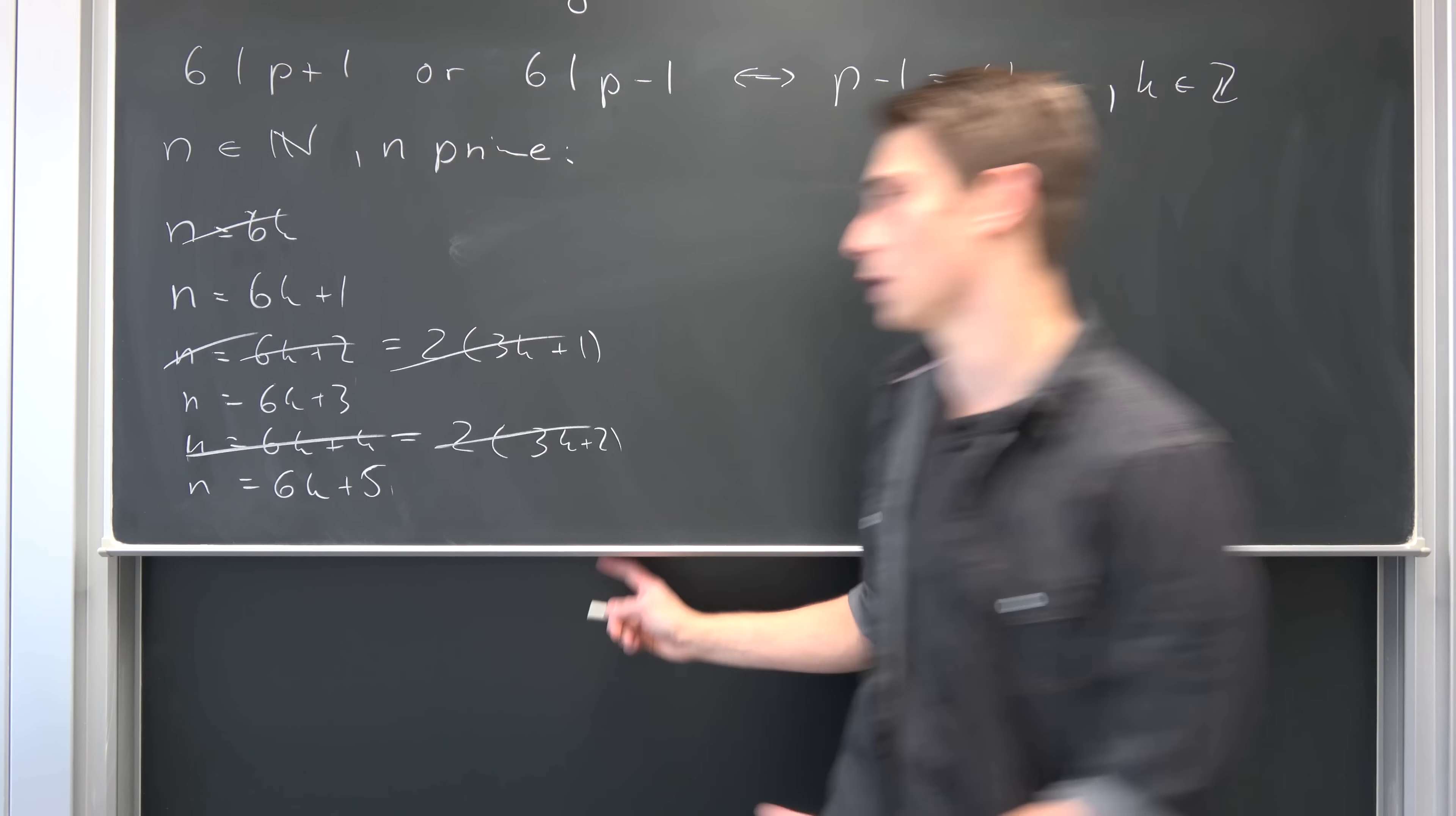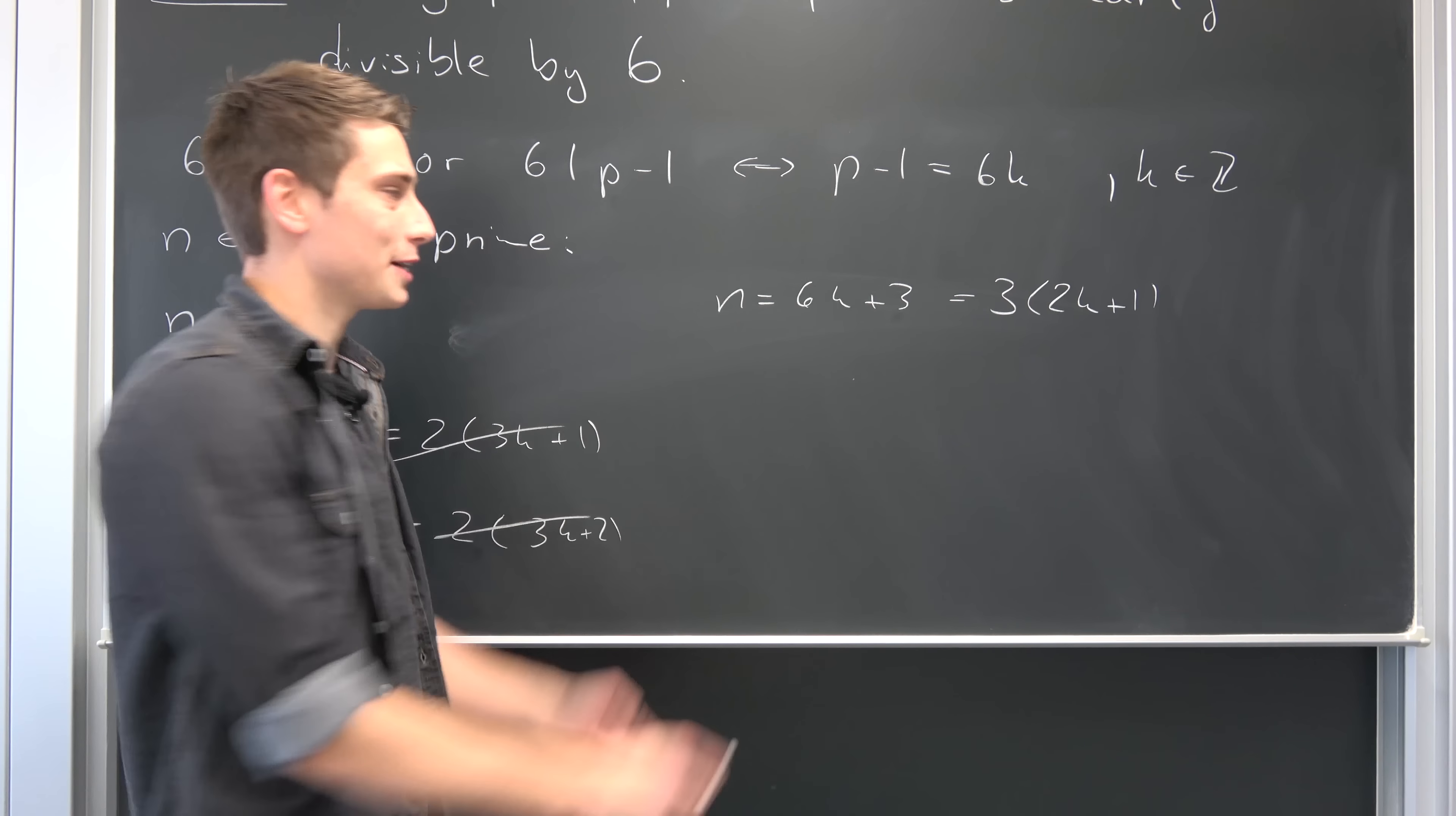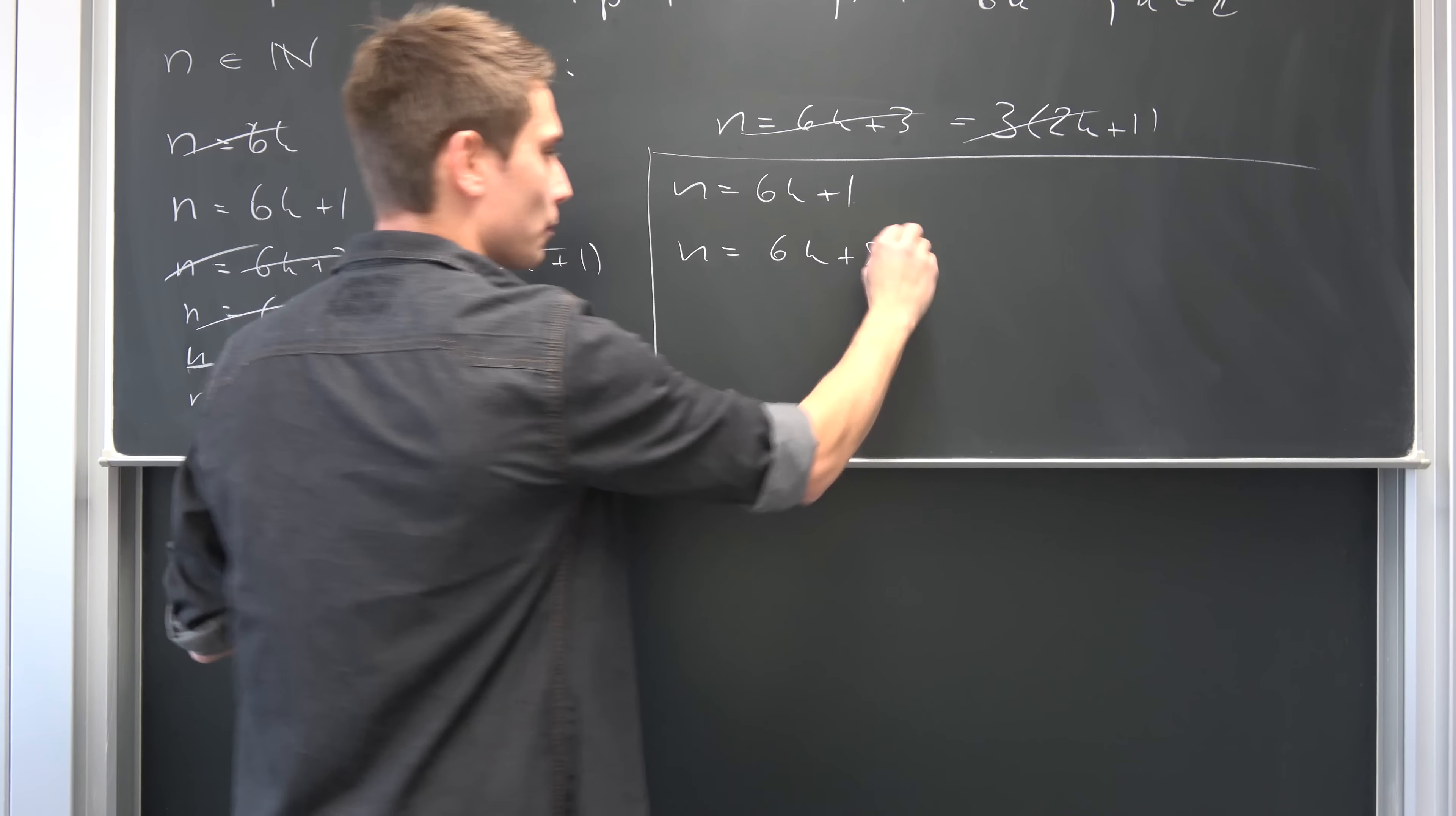We have 3 cases left. Let's consider this case, n equals 6k plus 3. Obviously, we can factor out the 3 right here. This is 3 times (2k plus 1). Well, 3 divides this number n, so this also doesn't correspond to a prime number. So our only two cases left are n equals 6k plus 1, or n equals 6k plus 5.